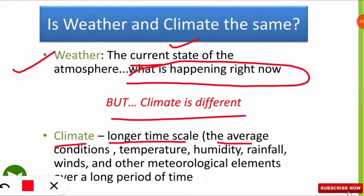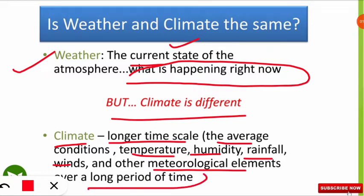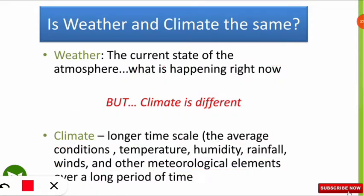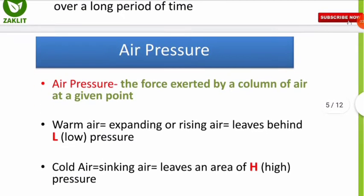Climate is different. Climate is the longer time scale — the average conditions of temperature, humidity, rainfall, winds, and all other meteorological elements over a long period of time, which determines the climate of a place. The current state at a present moment is weather; the long-duration average is climate.